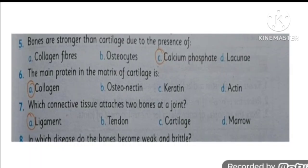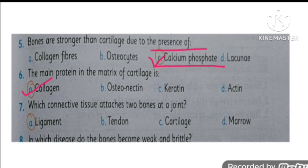MCQ number five is: bones are stronger than cartilage due to the presence of calcium. The main protein in the matrix of cartilage is collagen. Which connective tissue attaches bone at a joint? It is basically the ligament.